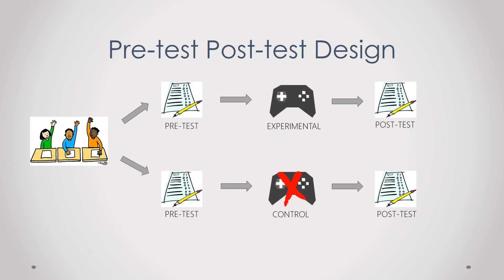For example, I hypothesize that playing computer games negatively affects students' proficiency in school. In the pre-test post-test design, I divide participants into two groups; both take a pre-test to gauge their proficiency. Then participants in the experimental group are exposed to computer games, while the control group is not. After exposure, both groups are given a post-test and the difference in the two conditions is assessed.